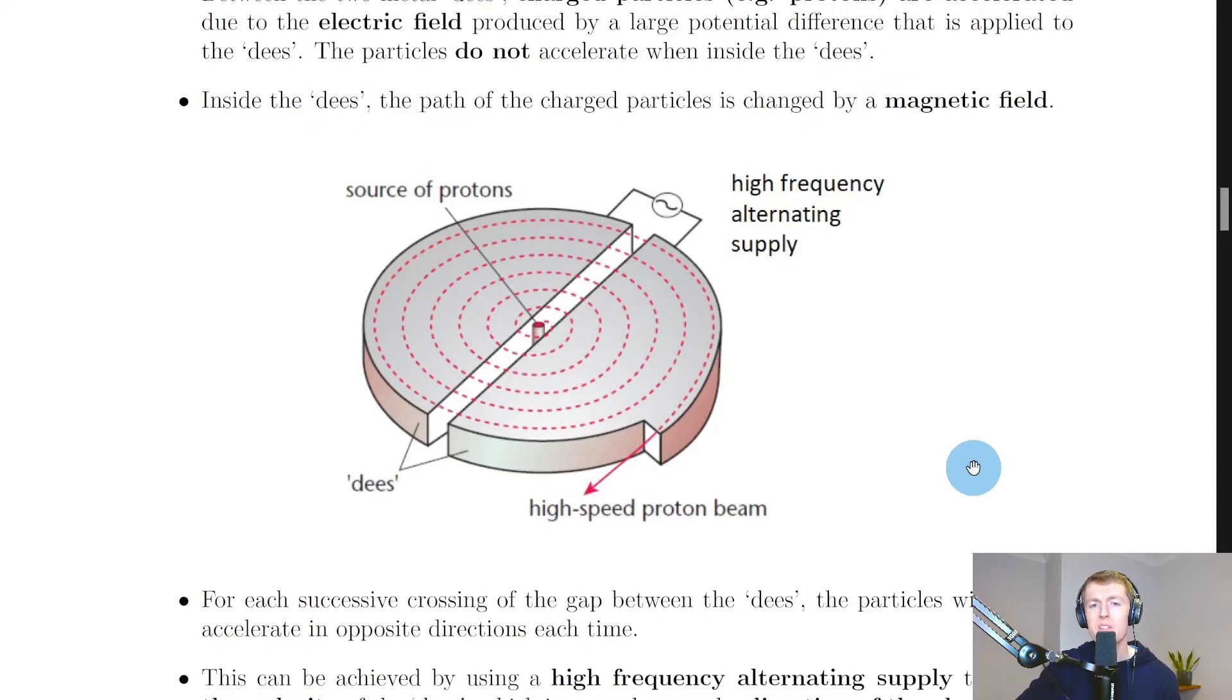Remember, the whole point of a particle accelerator is to increase the speed of the particles. In this example we've got a source of protons in the middle and the protons are being emitted from here and then being accelerated across the gap until they reach this first dee where they're then bending slightly and being accelerated across the gap here and then curving around in this direction and so forth.